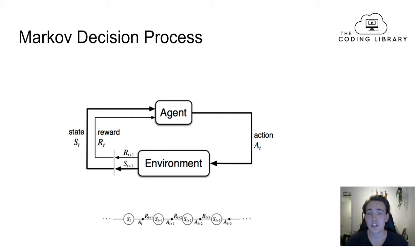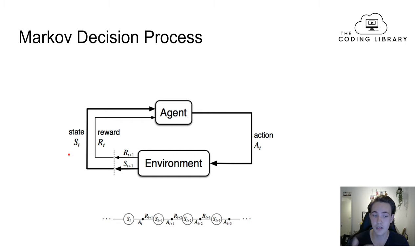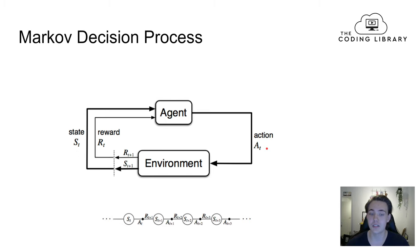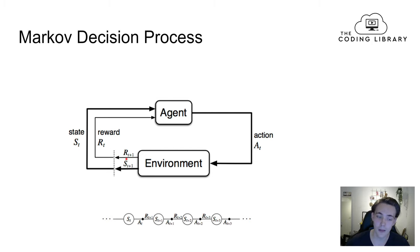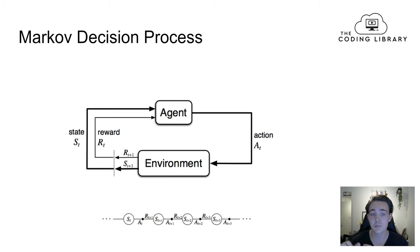Now we're going to talk about Markov decision processes and how we can use them in reinforcement learning. We have a state for the environment that is given to the agent at some time step T, along with a reward for the previous action. The agent takes an action at time step T, the environment outputs a new state at time step T+1, and gives a reward for the action taken. That reward and new state are fed back to the agent, which then takes another action, and this process keeps continuing as the agent learns.